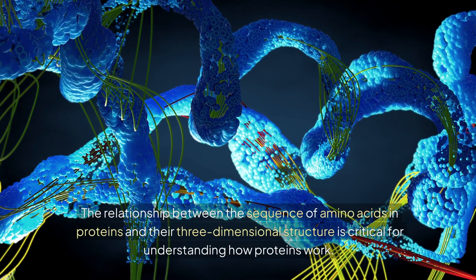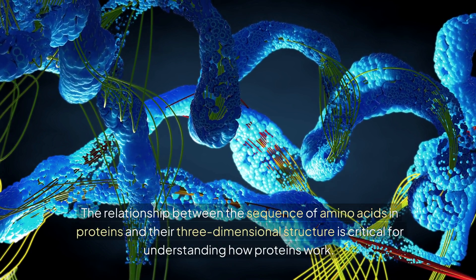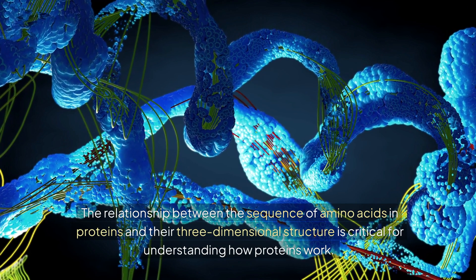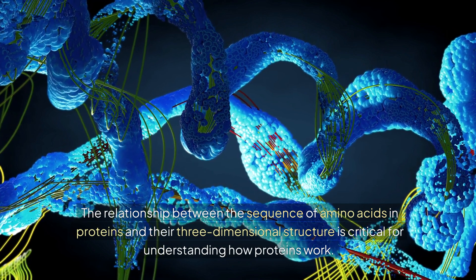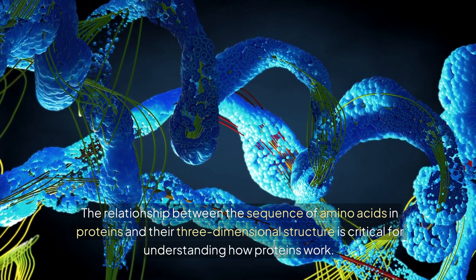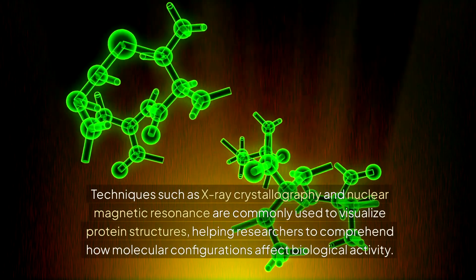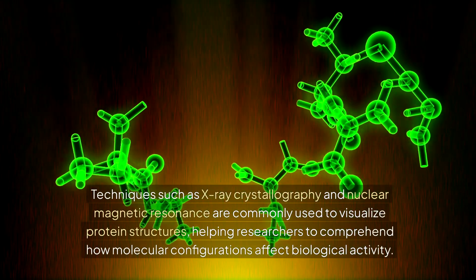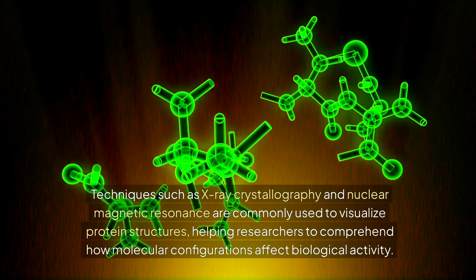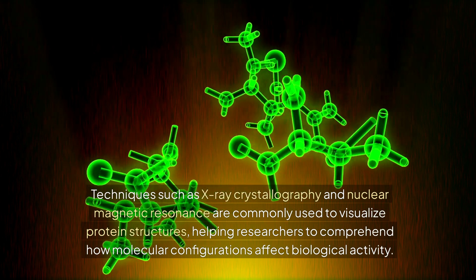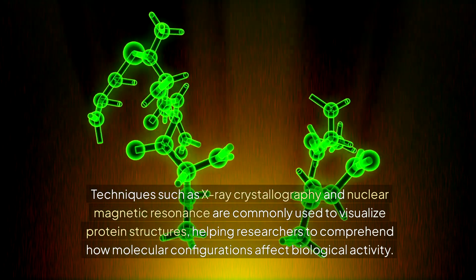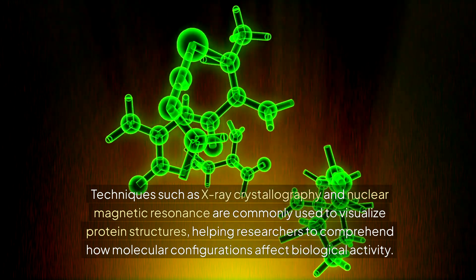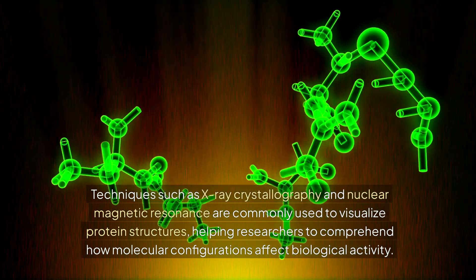The relationship between the sequence of amino acids in proteins and their three-dimensional structure is critical for understanding how proteins work. Techniques such as X-ray crystallography and nuclear magnetic resonance are commonly used to visualize protein structures, helping researchers to comprehend how molecular configurations affect biological activity.